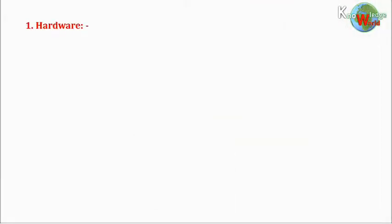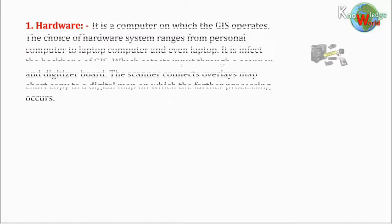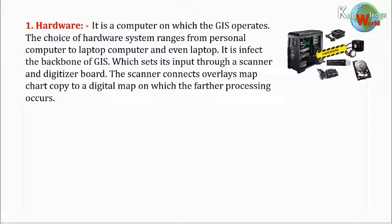Hardware. It is a computer on which the GIS operates. The choice of hardware system ranges from personal computer to laptop computer. It is in fact the backbone of GIS, which gets its input through a scanner and digitizer board. The scanner connects overlays, map chart copy to a digital map on which further processing occurs.